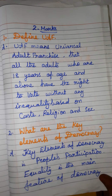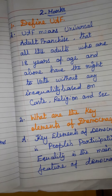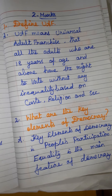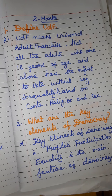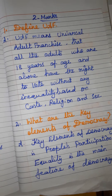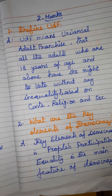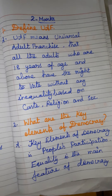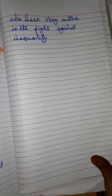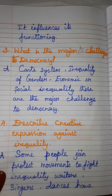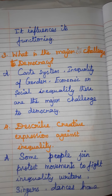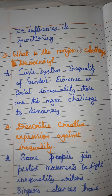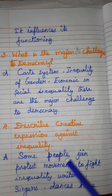What are the key elements of democracy? Key elements of democracy include people's participation. Equality is the main feature of democracy and it influences its functioning. The people struggle in many ways like rallies and opposition protests.